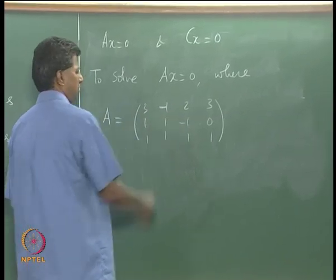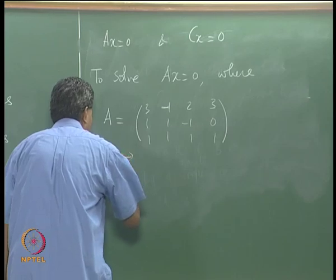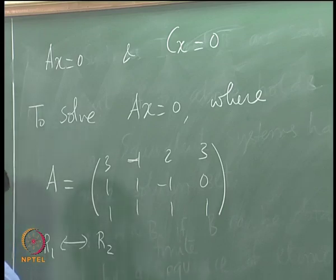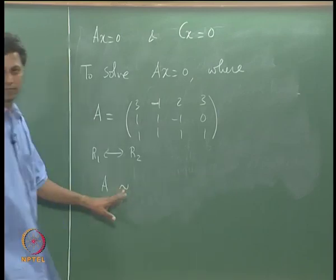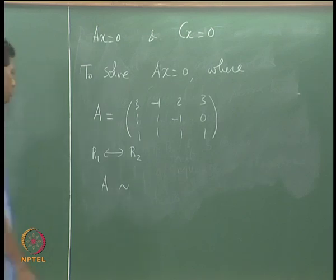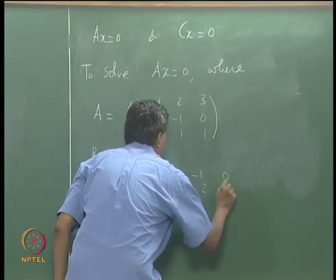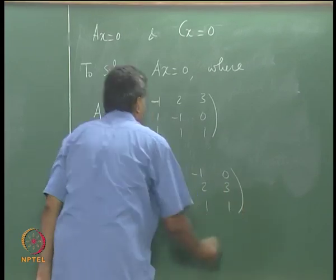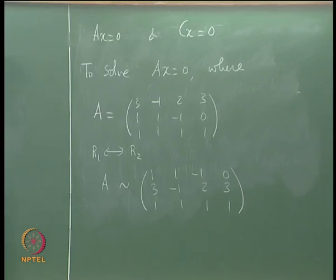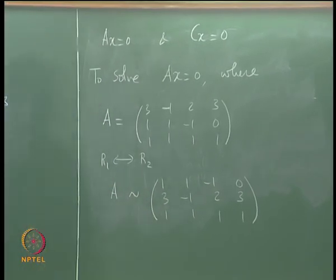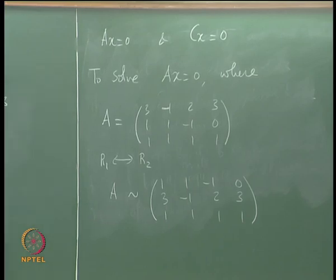First, interchange row 1 and row 2 (R1 ↔ R2). After this, A is row equivalent to the matrix with first row [1, 1, −1, 0], second row [3, −1, 2, 3], and the last row unchanged. The next step is to make the first-column entries in rows 2 and 3 equal to zero.